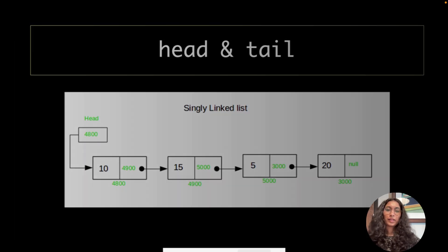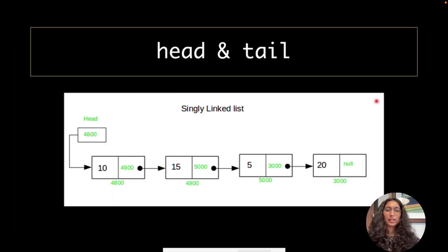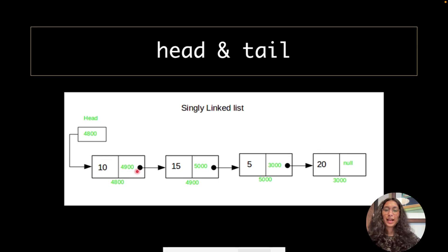So what are these addresses actually? For example, this is our first node and it has an address that references the next node. This node is denoted by 4800, which references 4900 for the second node. This is how we link all the nodes together in our list.